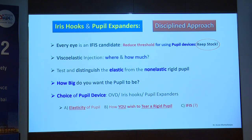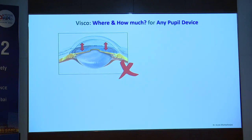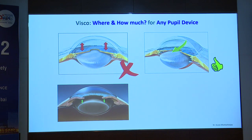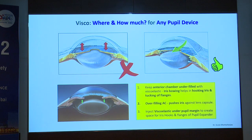The key to understanding small pupils is distinguishing the elastic from the non-elastic rigid small pupil — two completely different animals. Regarding viscoelastic use: do not inject a lot of OVD right away as it plasters the iris to the anterior lens surface, leaving no space for the device and making ergonomics difficult. Instead, inject viscoelastic under the pupil margin to lift it off the lens surface. Keep the AC underfilled — overfilling is counterproductive. Chang and Campbell in 2005 noted that unlike non-elastic myotic pupils, the IFIS pupil immediately snaps back to its original size after stretching.